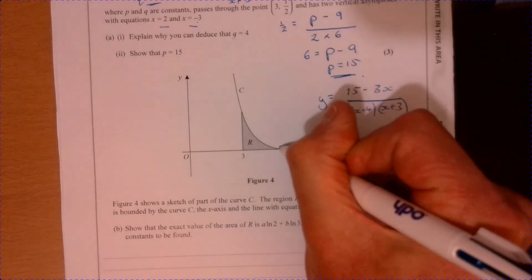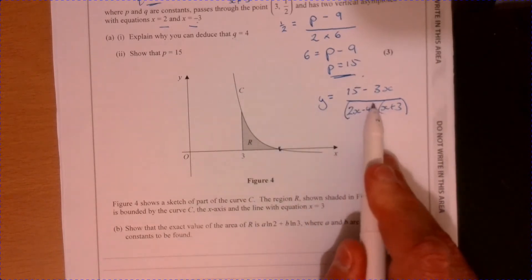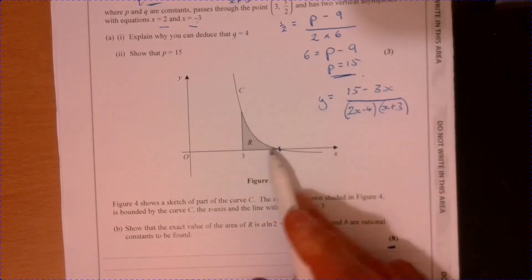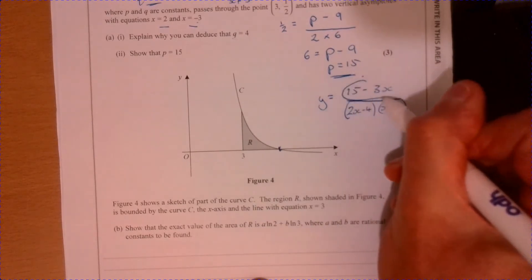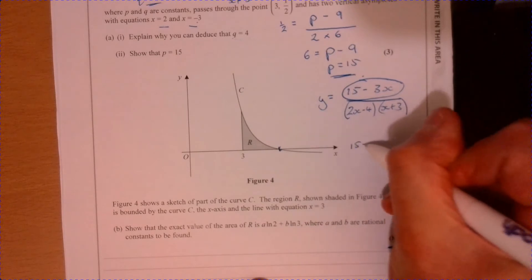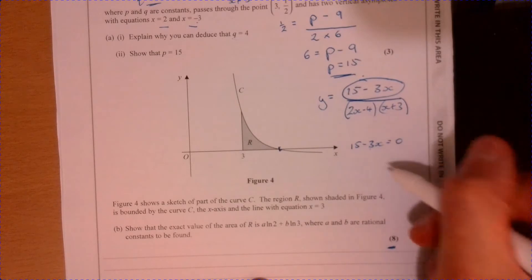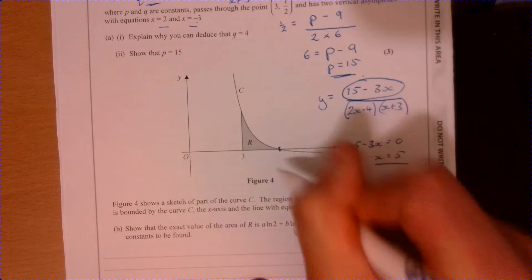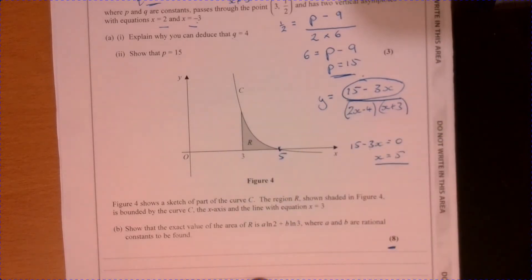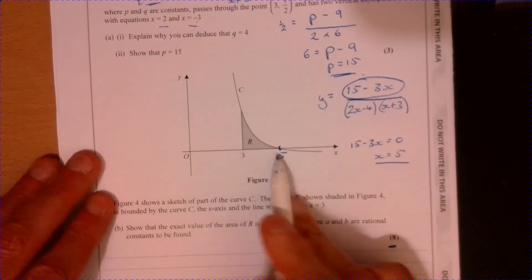So it's trying to work out the area just here. So we need to know what this point is here. In other words, when is this equal to 0? Well, when's this going to equal 0? It's going to be when this bit equals 0. So 15 minus 3x. When is that equal to 0? So add 3x to both sides and divide by 3. And I think you'll find x equals 5. So we've got our 5. So what's the question? The question is integrate this between 3 and 5.